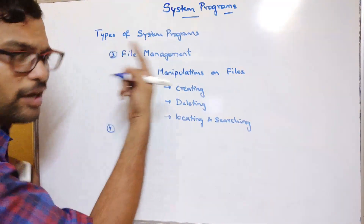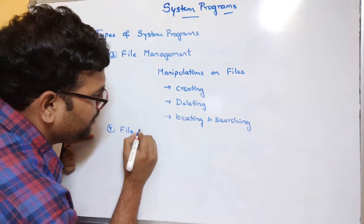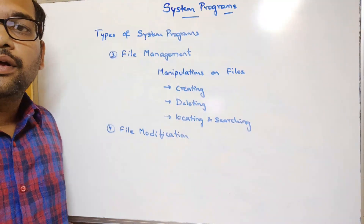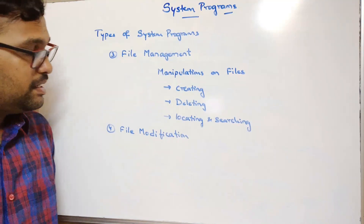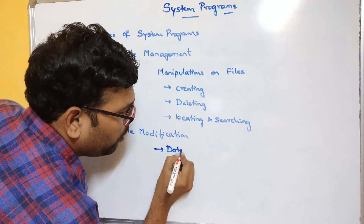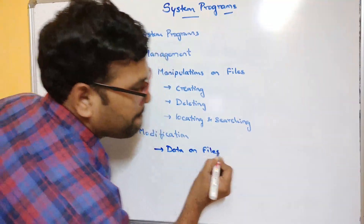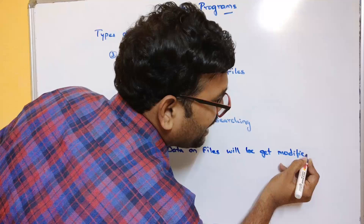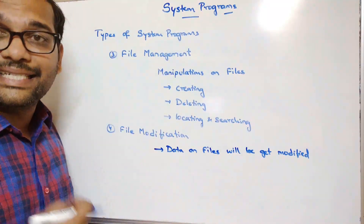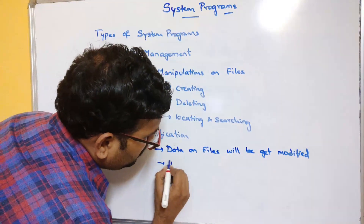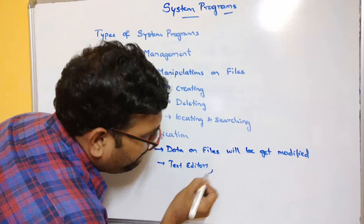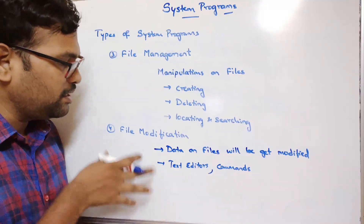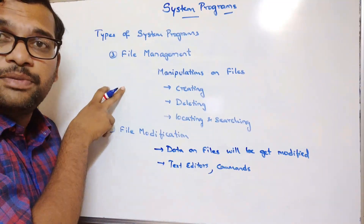The fourth type is file modification. The name itself indicates that the data on files will be modified. The data can be modified with the help of text editors and special commands. Some editors and special commands are available in order to change and modify the data. These are the two file-related types: file management and file modification.